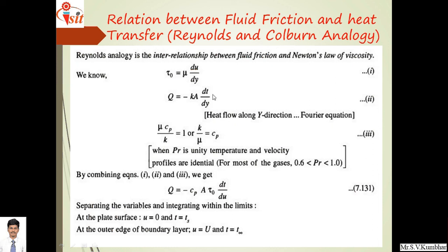In the last video lecture we studied Prandtl's number. Prandtl's number is given as mu Cp upon k, and when Prandtl's number is unity, then mu Cp upon k equals 1, that is k upon mu equals Cp. When Prandtl number is unity, temperature and velocity profiles are identical. For most gases, the Prandtl number is greater than 0.6 but less than 1.